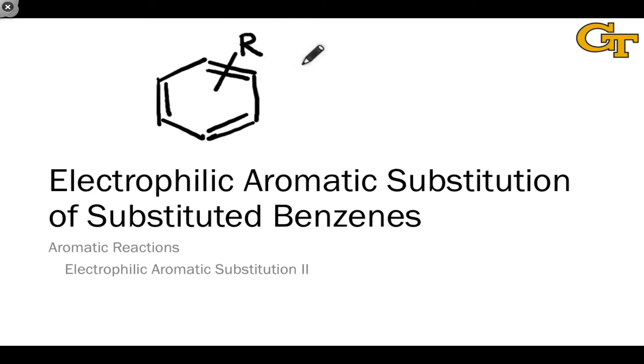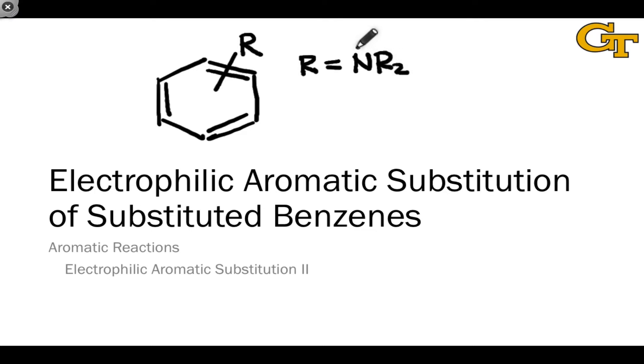Especially when R is an amino group — NH2 or NR2 — we get a number of problems stemming from this nitrogen atom being a pretty good Lewis base and a strong electron-donating group.